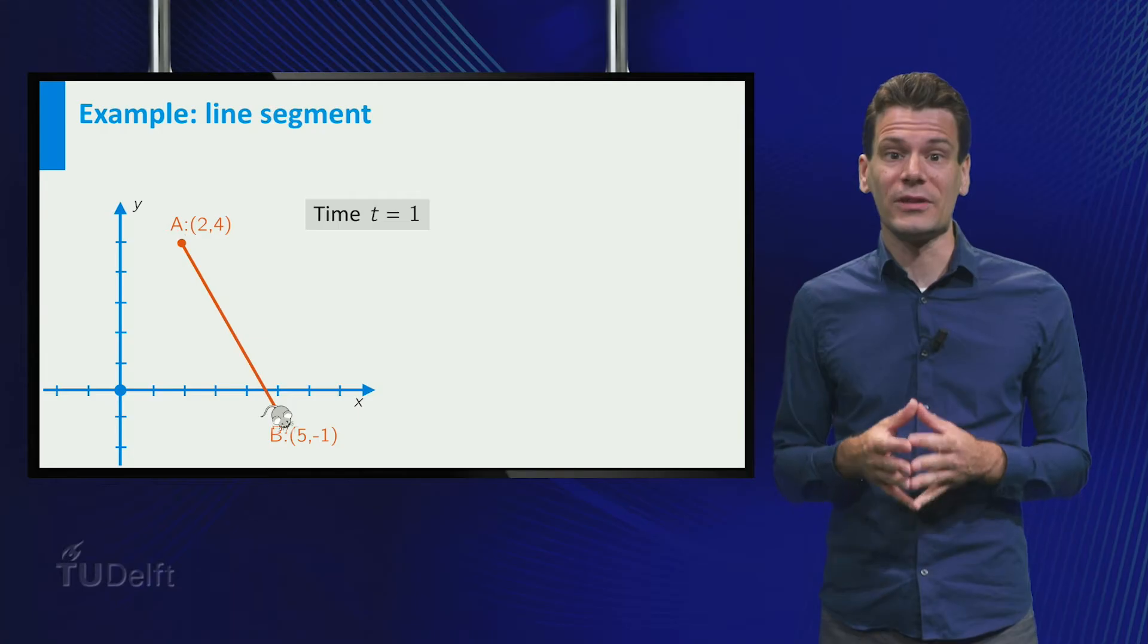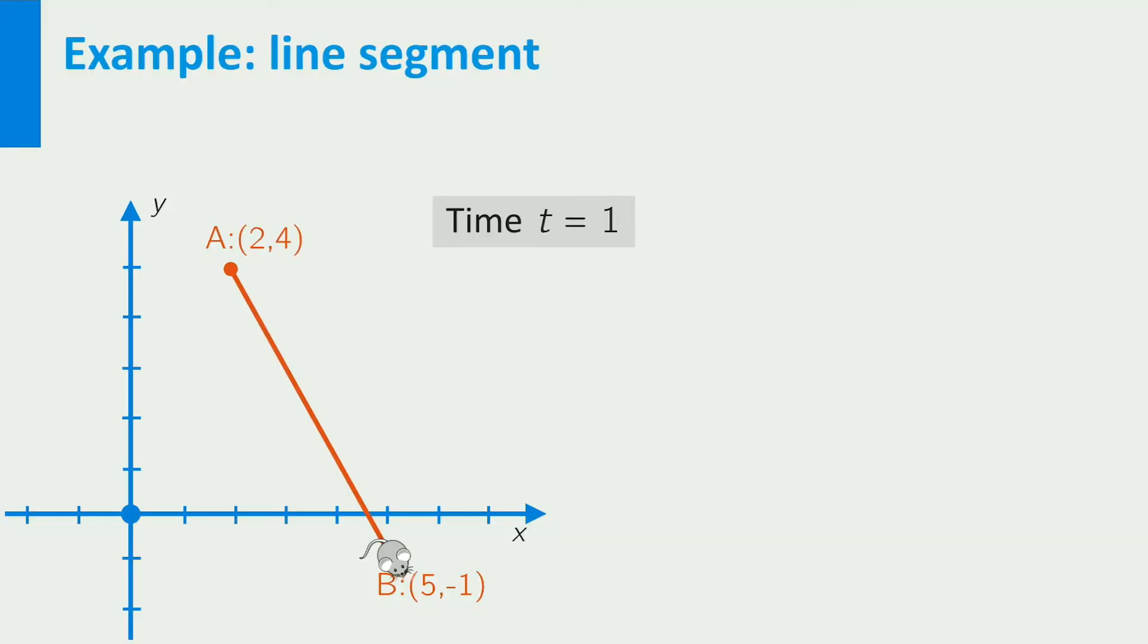What are the coordinate functions that describe its trail? Well, note that at t equal to 1/3, the mouse is exactly at one-third of the line segment, so its displacement from A is exactly one-third of the vector AB.